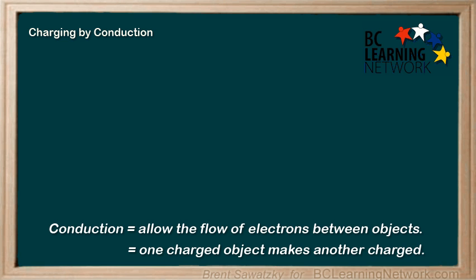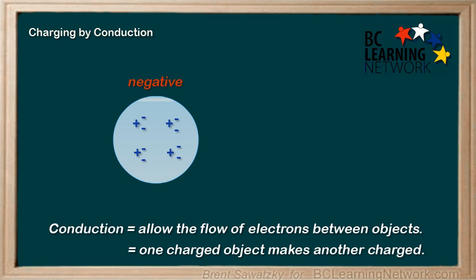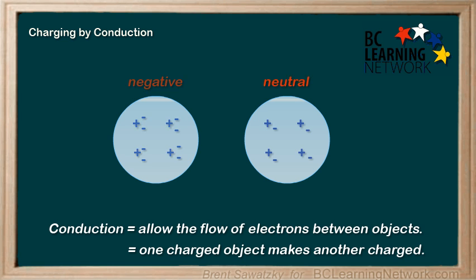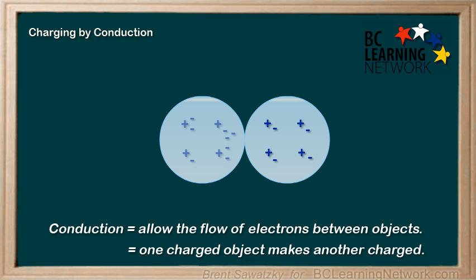For example, if we start with a negatively charged object and we touch a neutral object, some of the electrons in the negatively charged object, which are trying to get away from each other—remember they're all repelling each other—if you touch them they find a way to jump to a more friendly environment, that is the neutral object. They're trying to get away from each other and they find some new territory.